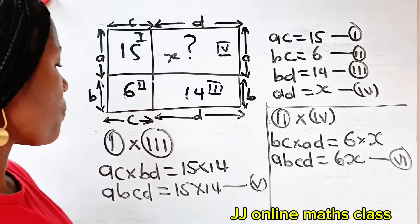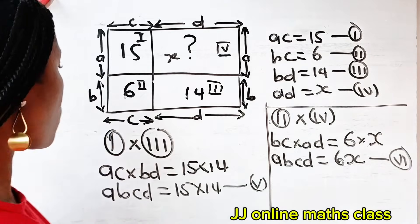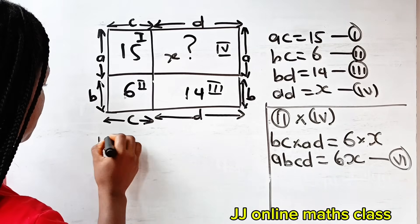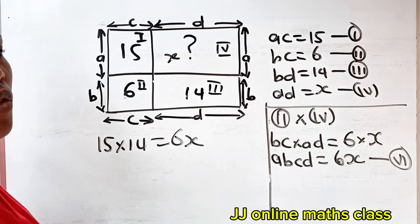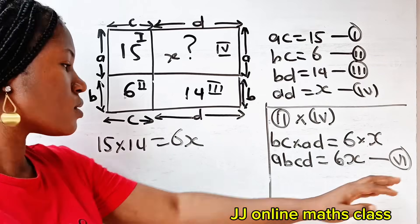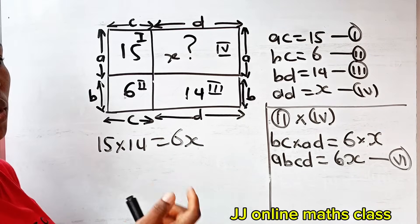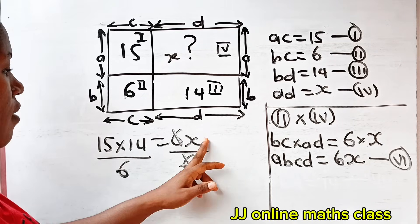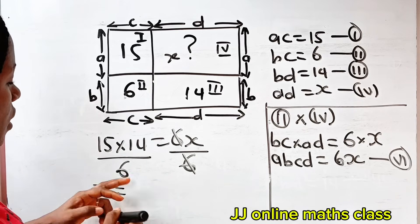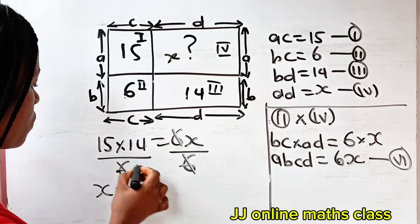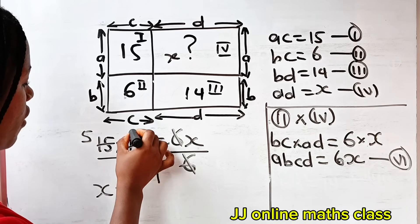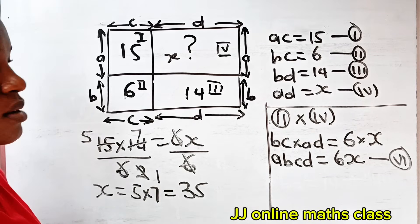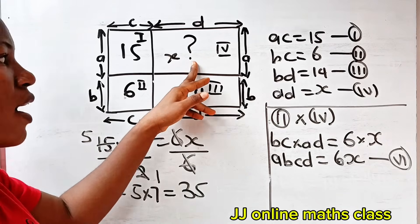Since ABCD = 15 × 14 from equation 5 and ABCD = 6X from equation 6, it simply means that 15 times 14 equals 6X. Dividing both sides by 6: 15 divided by 3 gives 5, and 14 divided by 2 gives 7. So X equals 5 times 7, which gives us 35 square meters. That is the area of section IV.